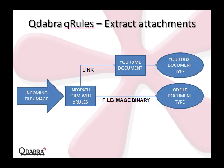One of the features in QRules is the ability to extract attachments from your XML documents. This way, you can ensure minimal form size and improve performance. QRules does this by moving the attachments out of the form and replacing them with links.